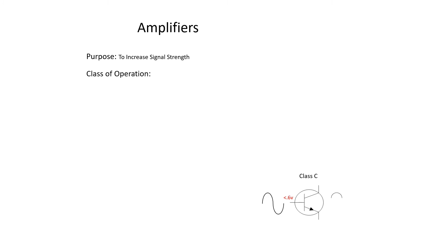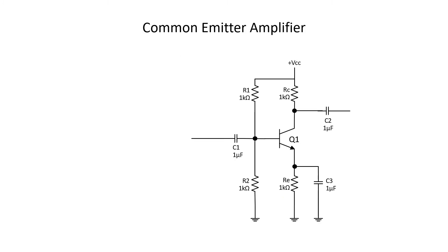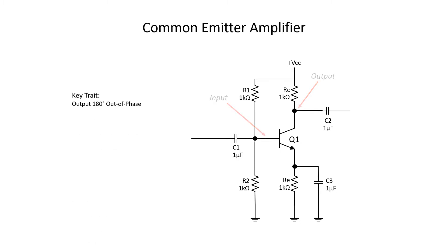Now let's move on to my favorite amplifier configuration — it's near and dear to my heart — the common emitter amplifier. The common emitter amplifier has an input on the base and the output is taken from the collector. The terminal we didn't talk about is the emitter, which is why the emitter is common to both the base and the collector. A key trait of the common emitter amplifier is that the output is 180 degrees out of phase with the input.